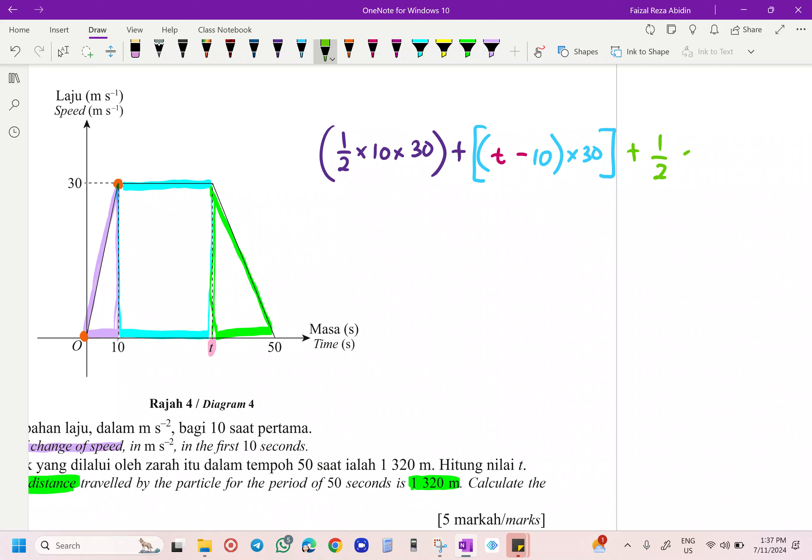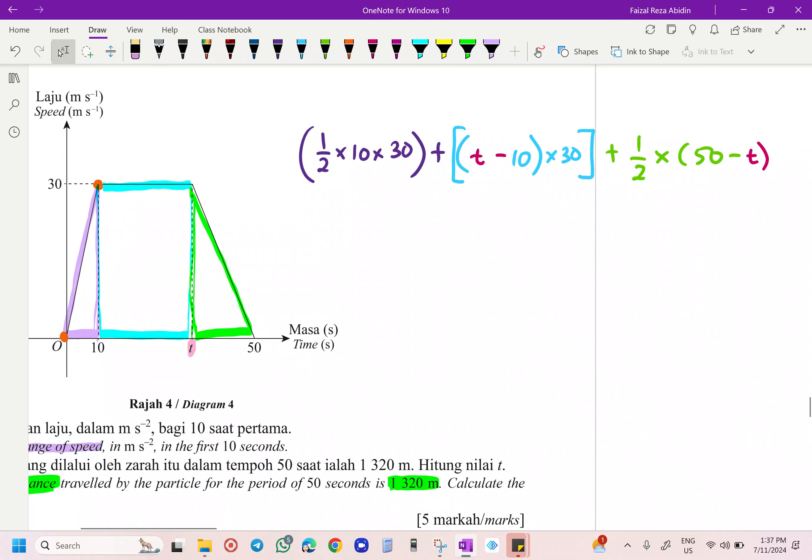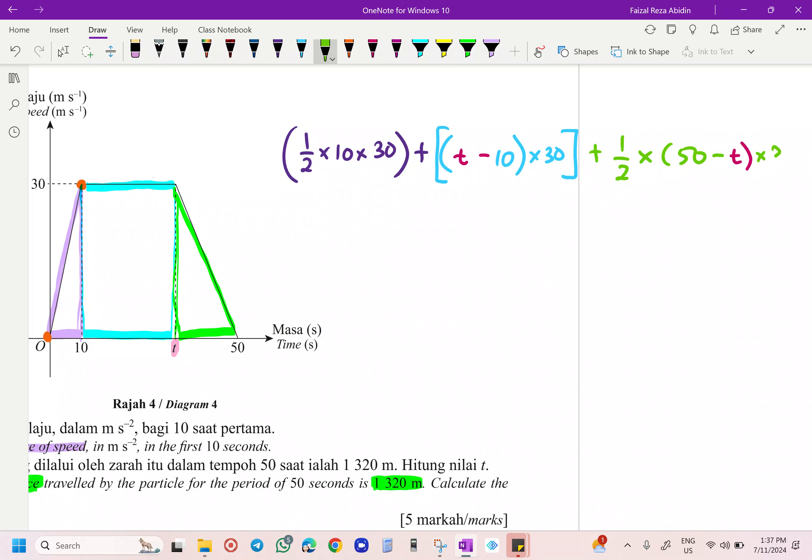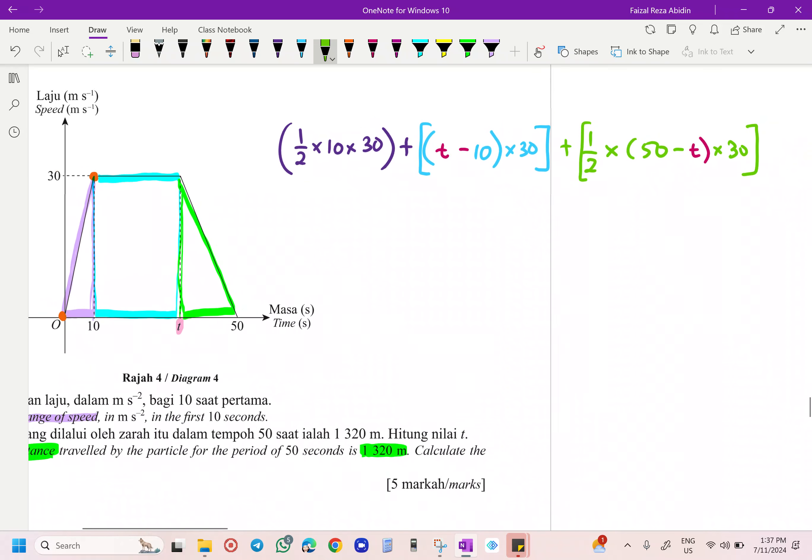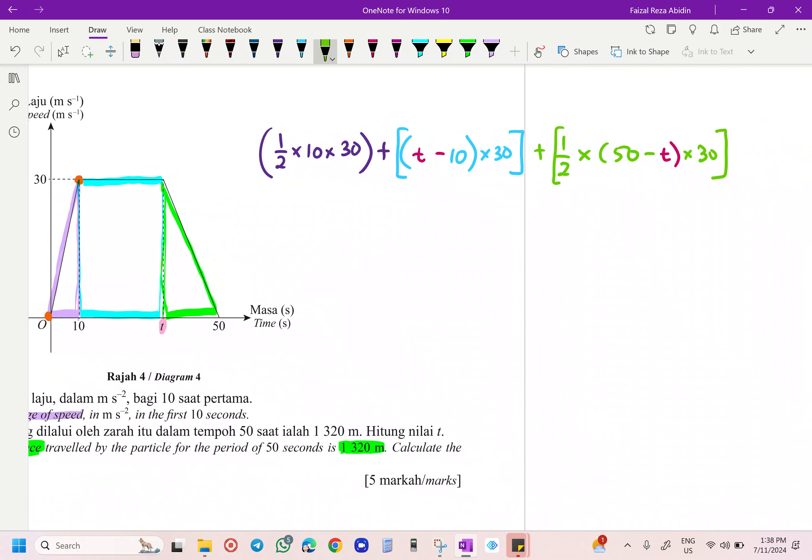This one going to be for your rectangle, and then we are going to get for our triangle, 1 over 2 times, yes, we are going to get this one 50, we have to minus with T. Okay, you know what, 50 is straight away, and then we are going to times by 30, your height there. So everything here we are going to get equals to 1,320.